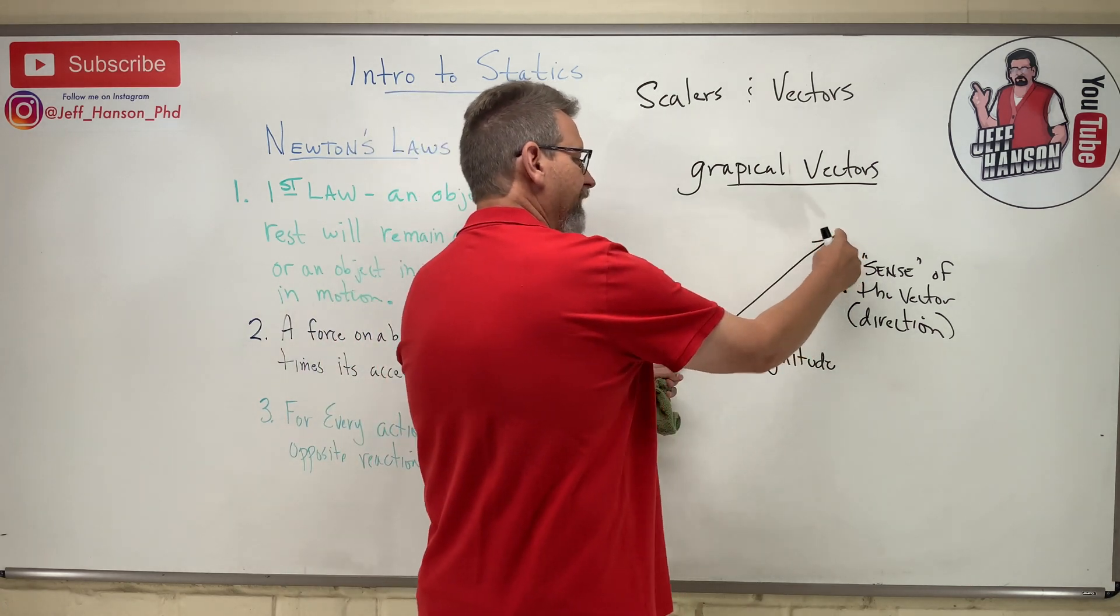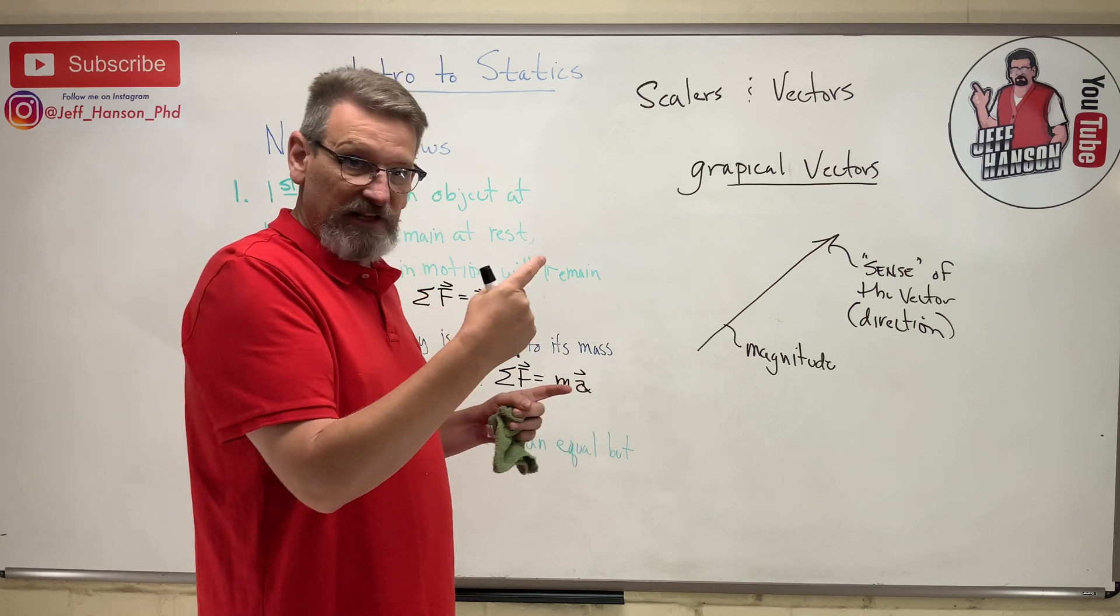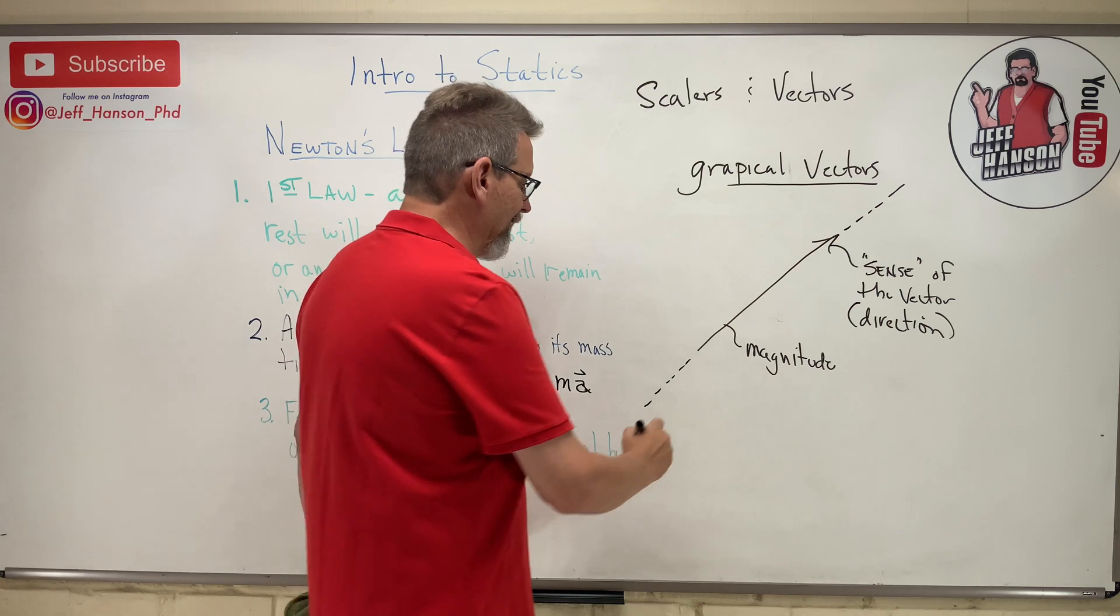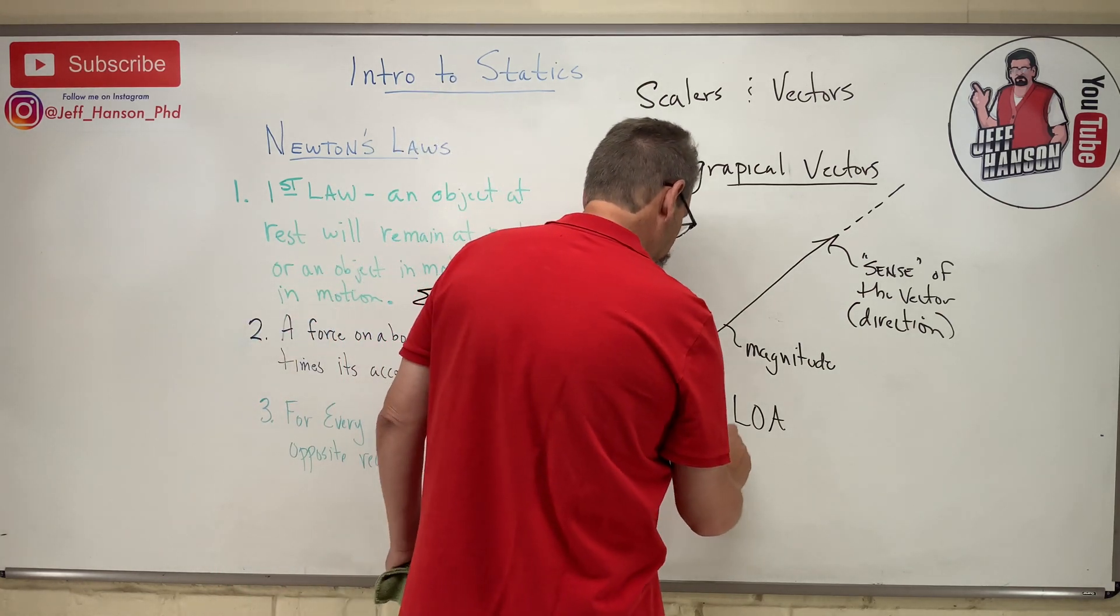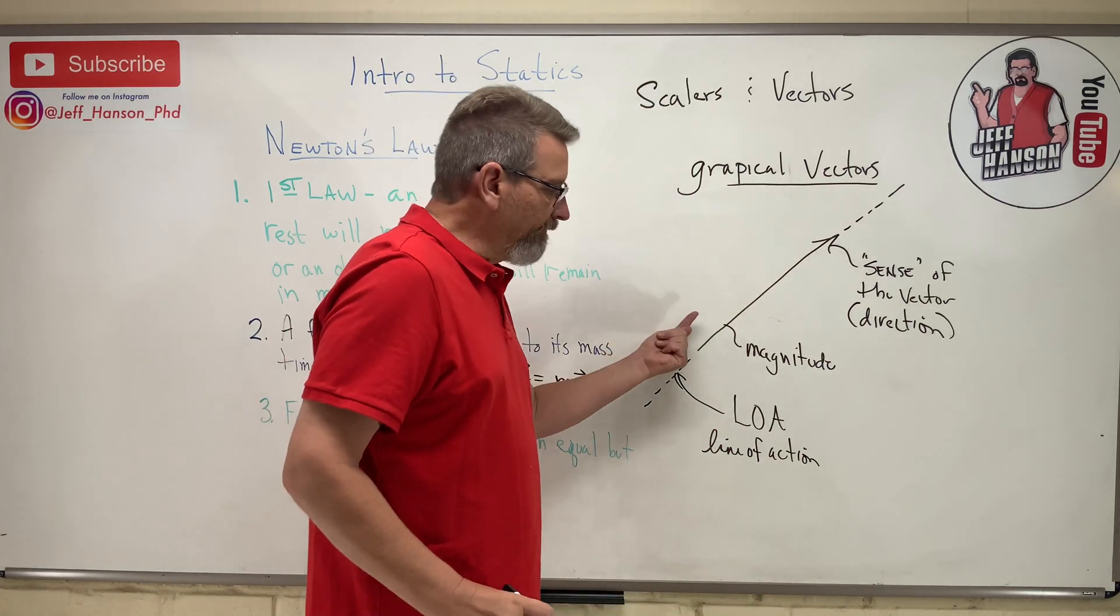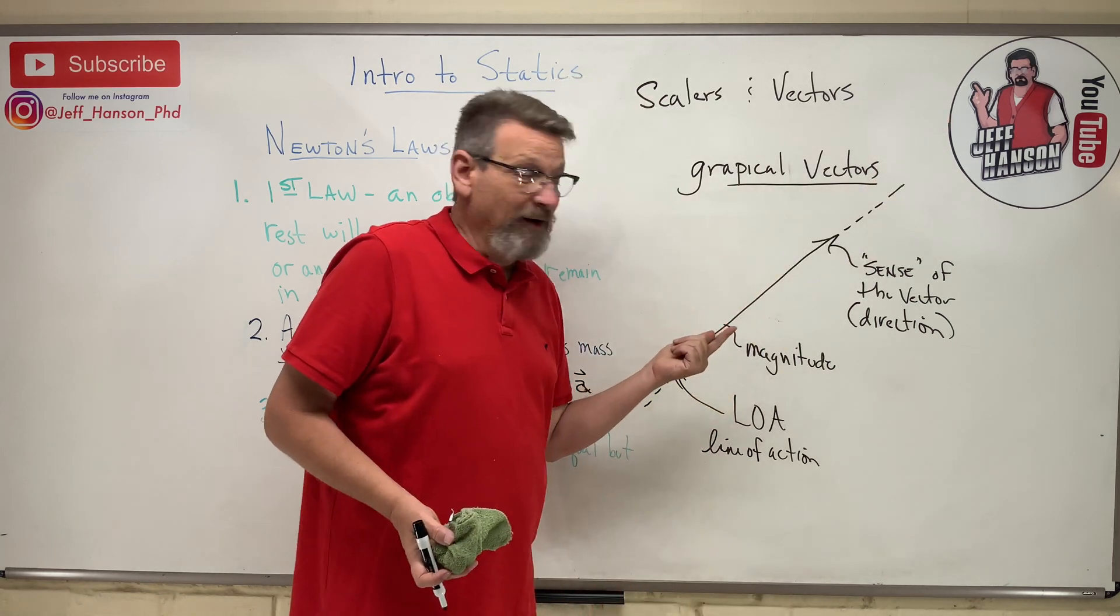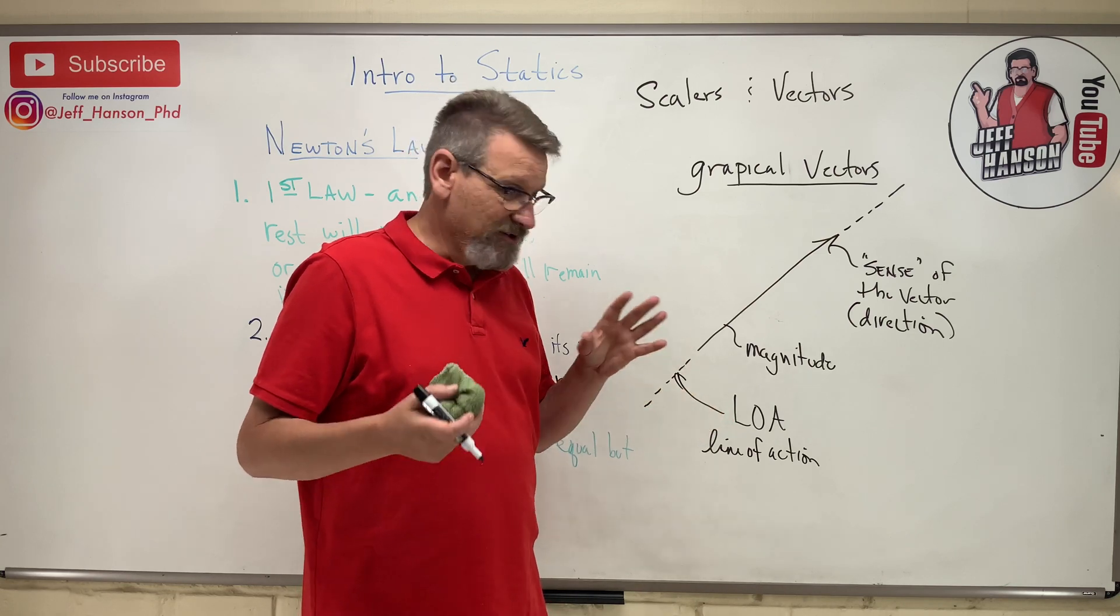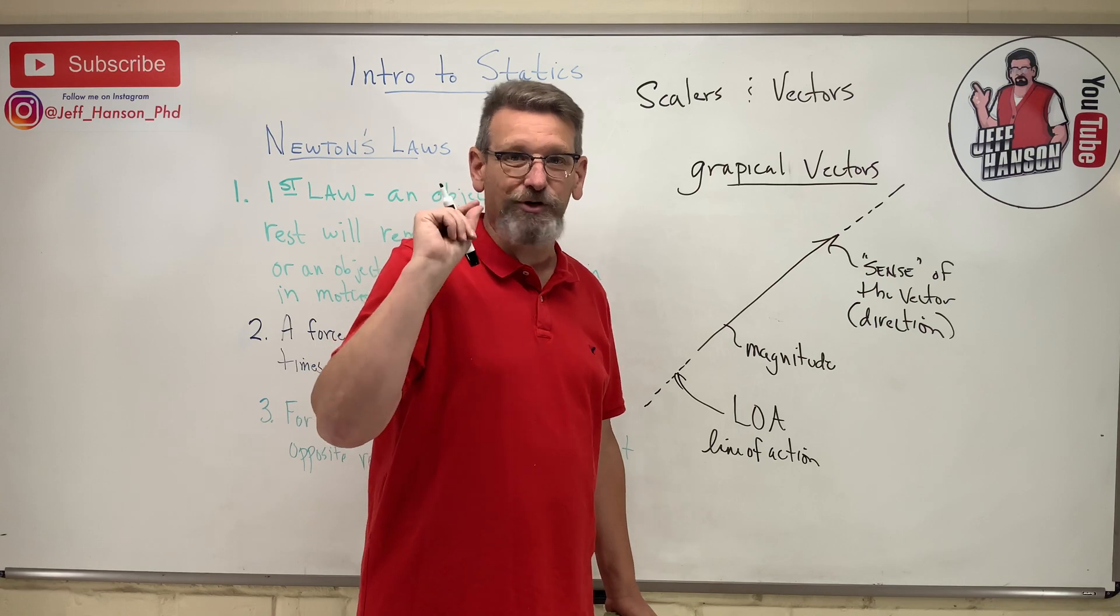So if I sketched a vector at the right angle and a length that represented, say I had 100 pounds and for every inch it represented 10 pounds, I would draw a 10 inch vector. And the only other thing you need to know is vectors lie on a line. And that line is called the line of action, the LOA. And it goes on forever and ever. So for instance, if you had your car and you ran out of gas, does your car care if you push on it or pull on it? As long as I'm pulling in the same direction, the car doesn't care. So a force can move up and down a line of action without changing the effect to the body that it's pushing on. When we come back, we're going to talk about vector addition. Thank you.